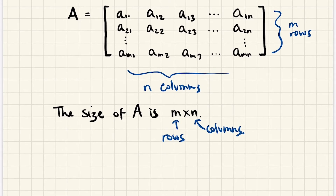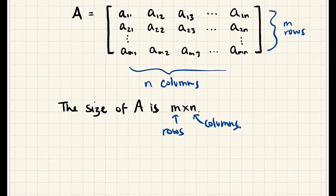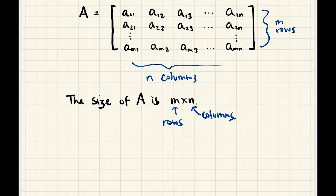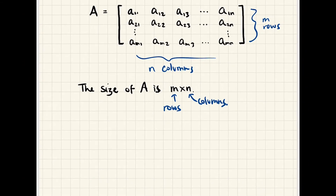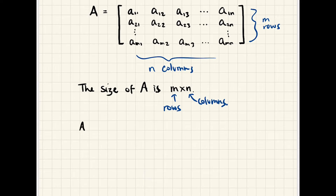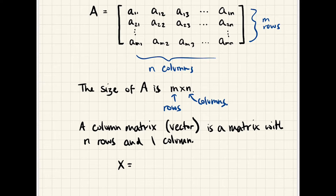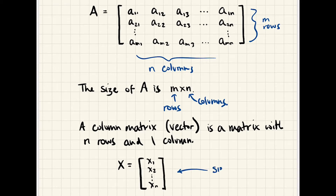Specifically, we will be working with what are called column matrices. A column matrix, which is also called a vector, is just a matrix with n rows but a single column. We're going to use the capital letter X quite a bit for that. We can look at its entries and call them x₁, x₂, all the way down to xₙ. This vector has size n by 1.